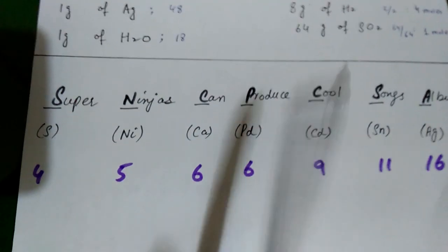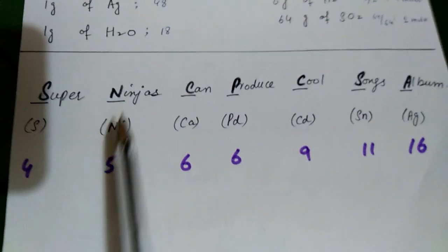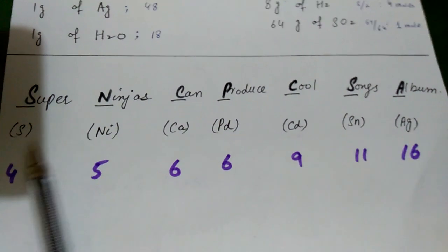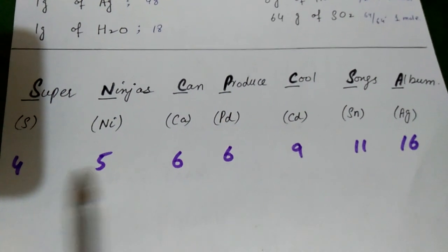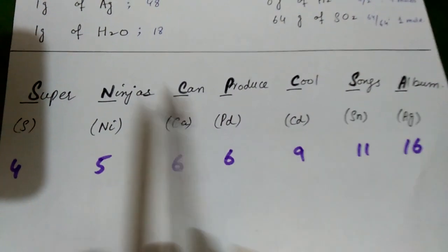There are some elements which are different number of isotopes. Like Super Ninjas can produce a cool song album. So we need to know how many of them are. And simply 4, 5, 6, 6, 9, 11, 8, 16. Right.